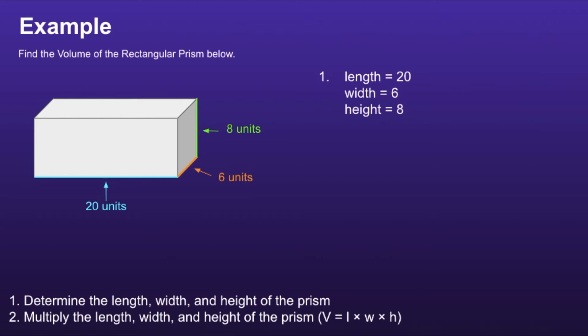This moves us on to step number 2: multiply the length, width, and height of the prism. You can see once again the formula. So starting with the formula, we can replace the L, W, and H with the length, width, and height of the prism. This leaves us with V is equal to 20 times 6 times 8. And 20 times 6 times 8 is equal to 960.